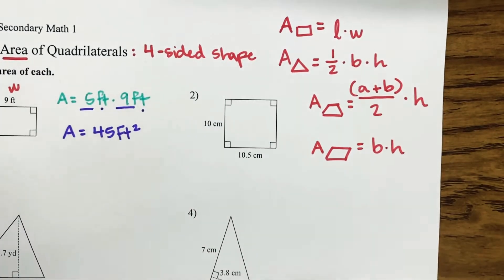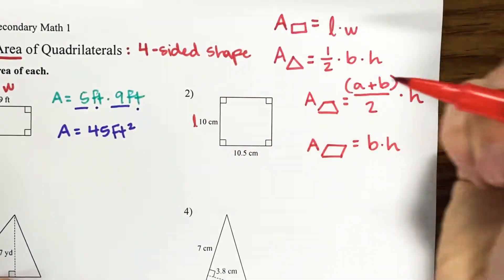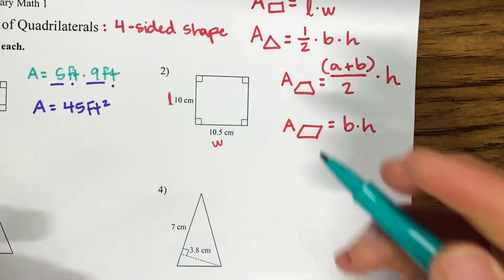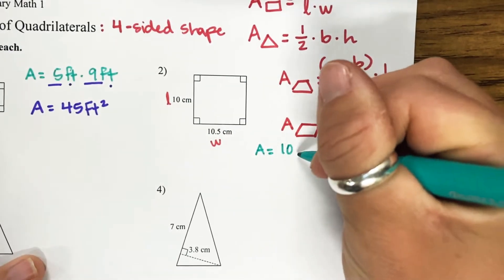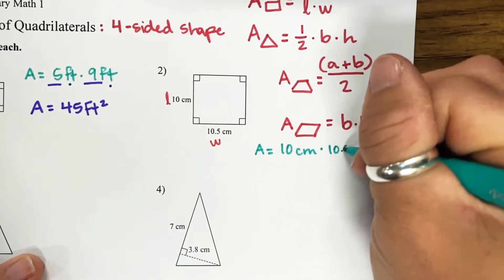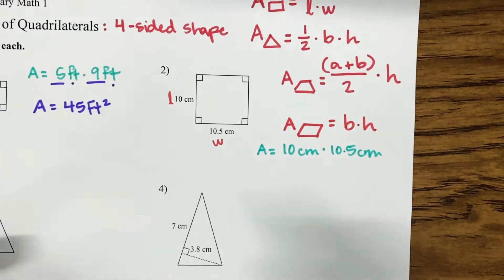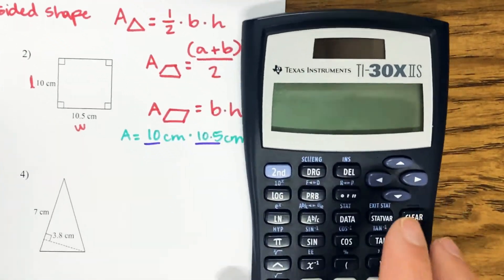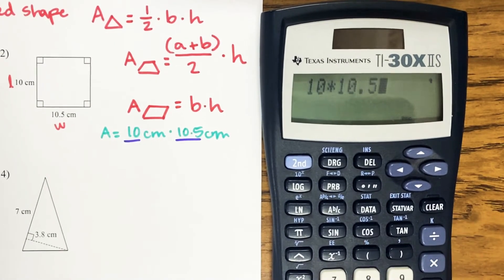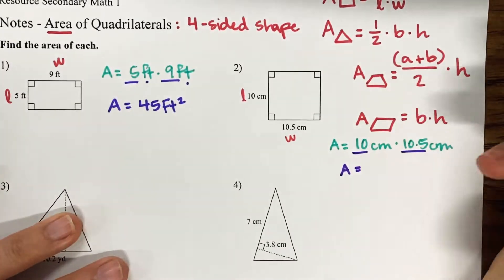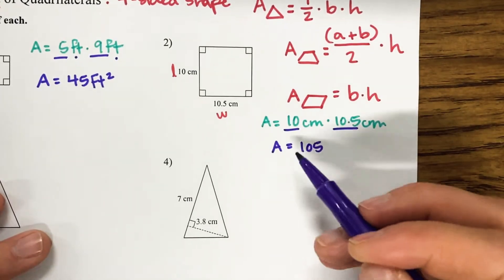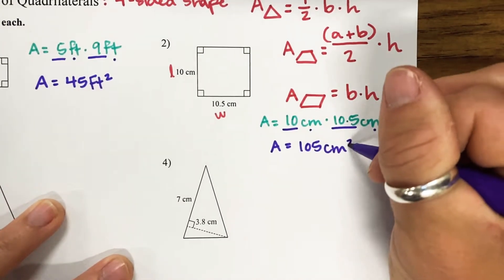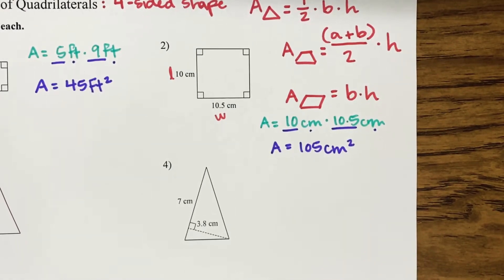Let's look at number 2. So let's identify our length and our width. I'm going to make my 10 my length and 10.5 my width. So I have area equals length, 10 centimeters, times my width, 10.5 centimeters. Now we can go ahead and multiply — so I have 10 times 10.5 and I get 105. So the area of this rectangle is 105, but 105 what? The units of measurement are centimeters, and because there are two being multiplied, it is centimeters squared.